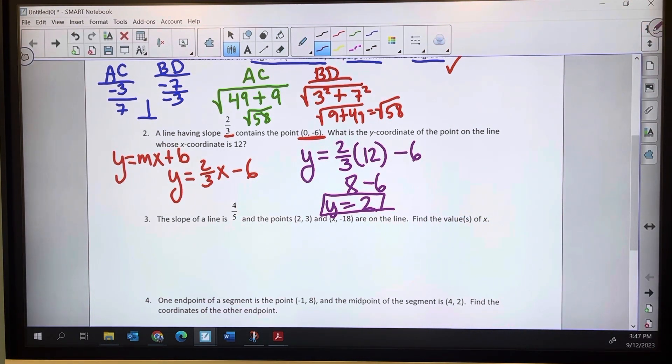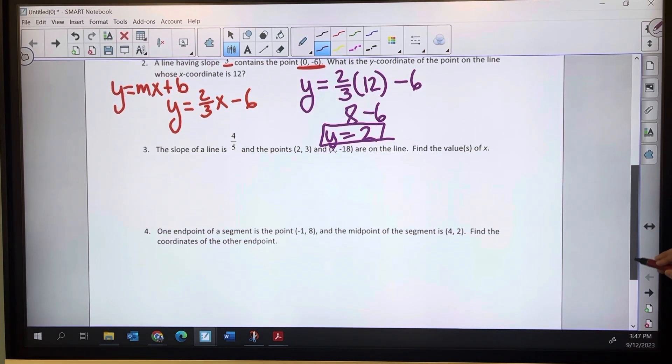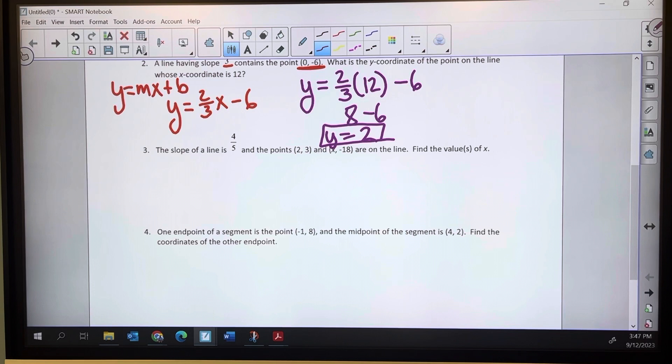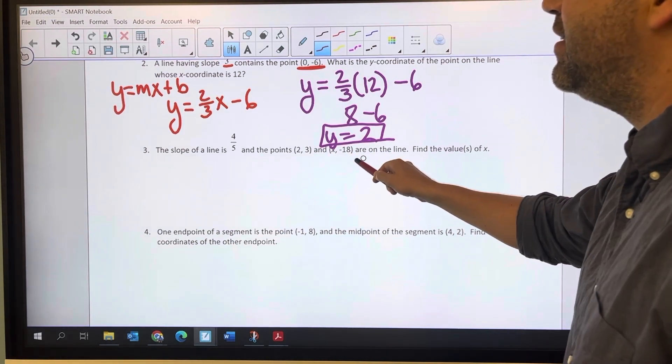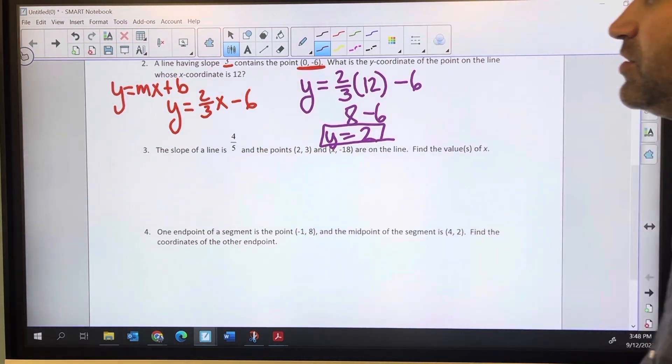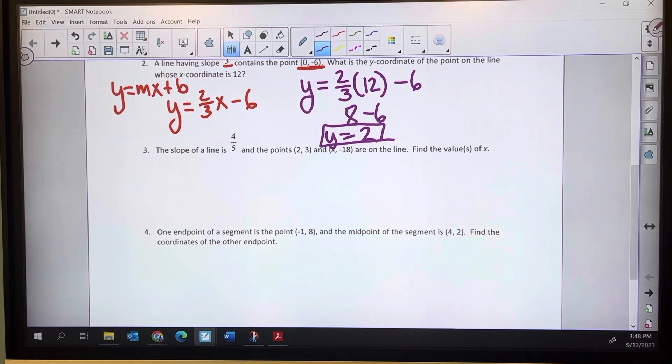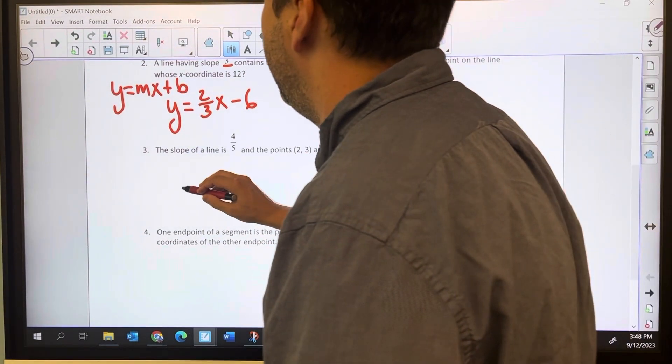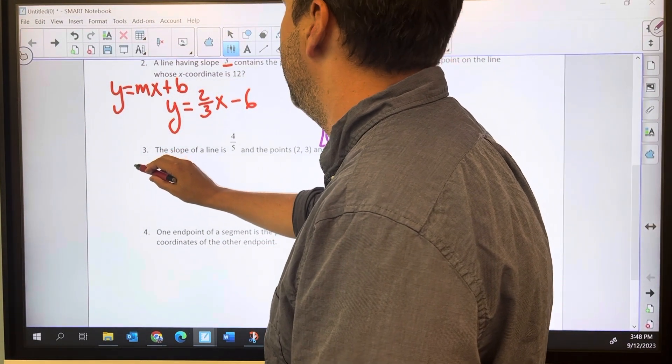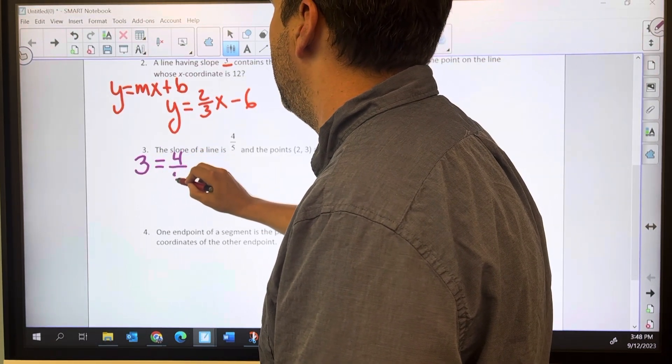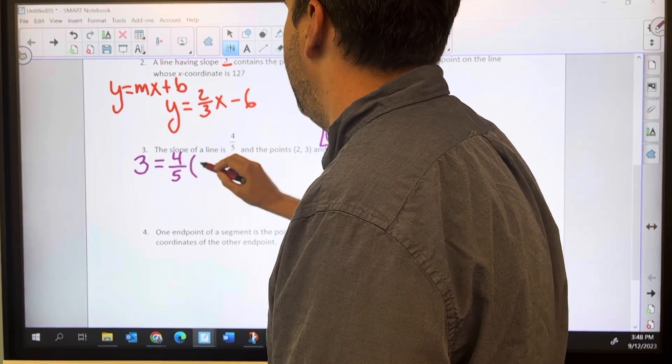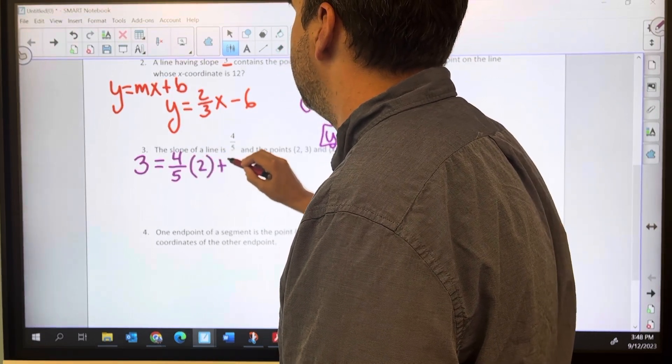Number 3. Number 3 is going to lead us down a deep hole. But we've got a slope and we've got two points that are on the line, and I'm looking for the x value of the second point. So I'm going to ignore that second point right now and just use the point and the slope in order to write the equation of the line. This one I don't have a shortcut for, so I really need to go through. And y is 3, m, the slope is 4 fifths, x is 2, plus b.